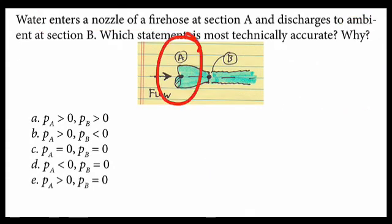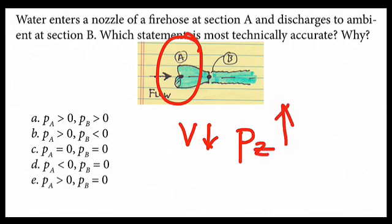at section A, we know the velocity is low relative to B, so we know the pressure, and more correctly that should be piezometric pressure, will be high. And since this is zero, the pressure at A must be greater than zero.